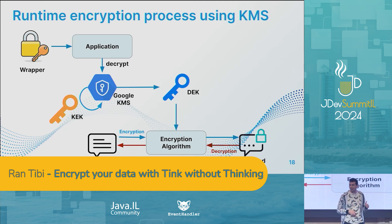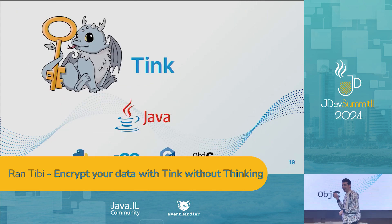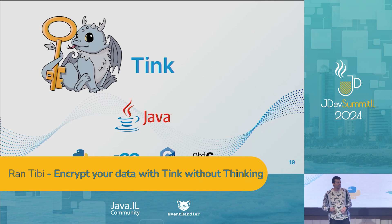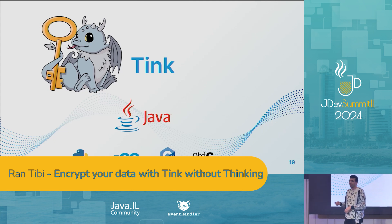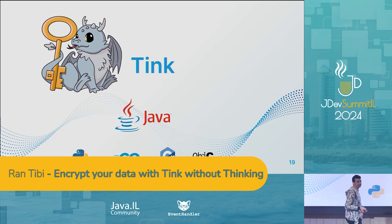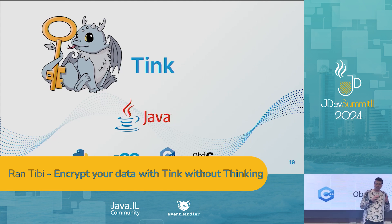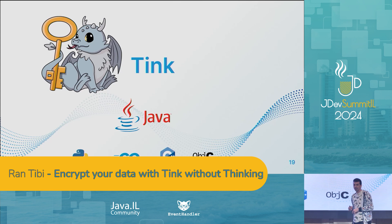Now it might look a bit complex — a lot of steps, a lot of engineering. But this is exactly where Tink comes into the picture. Tink is an open source library published by Google. It helps non-cryptographers safely implement common cryptographic tasks. It's implemented in Java, but also has implementations in Python, Go, C++, and Objective-C. It supports many functionalities such as symmetric and asymmetric encryption, deterministic and non-deterministic encryption, JWT tokens and digital signatures. It's cloud agnostic, so you can use it with Google KMS or AWS KMS.